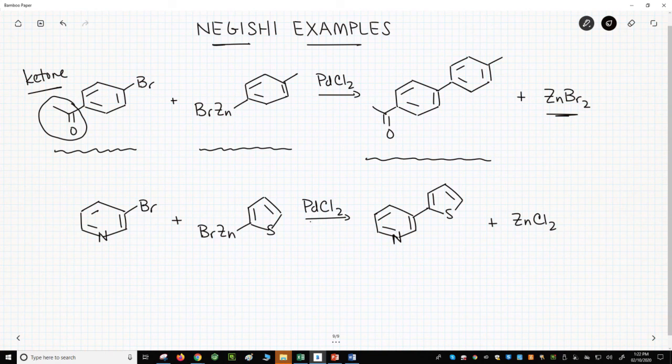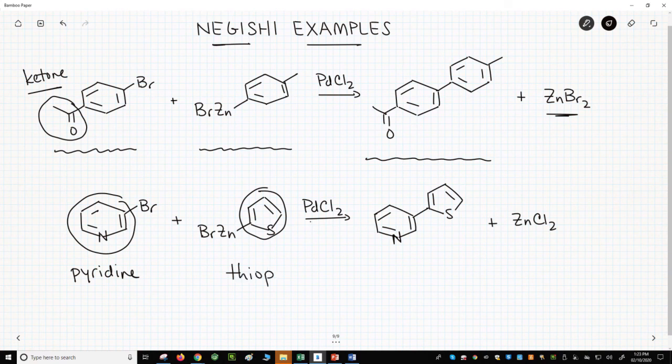The reaction across the bottom is also a Negishi coupling, and this highlights that Negishi reactions and coupling reactions do not require a benzene ring. The aromatic partners can be other rings, like pyridine and thiophene. In this case, the aryl halide is a bromopyridine, and the aryl zinc contains a thiophene.